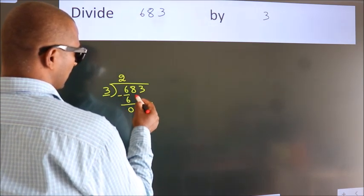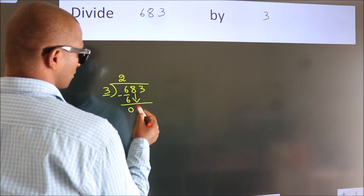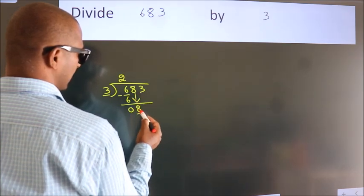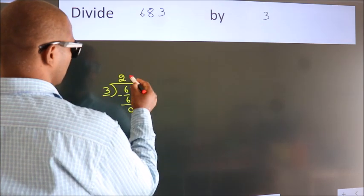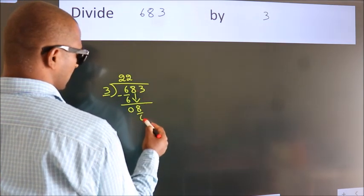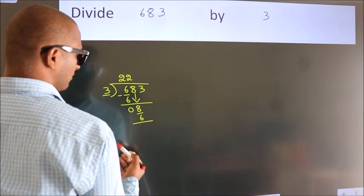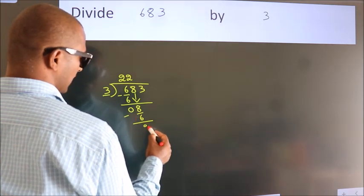After this, bring down the beside number, so 8 down, so 8. A number close to 8 in 3 table is 3 2s, 6. Now, we subtract, we get 2.